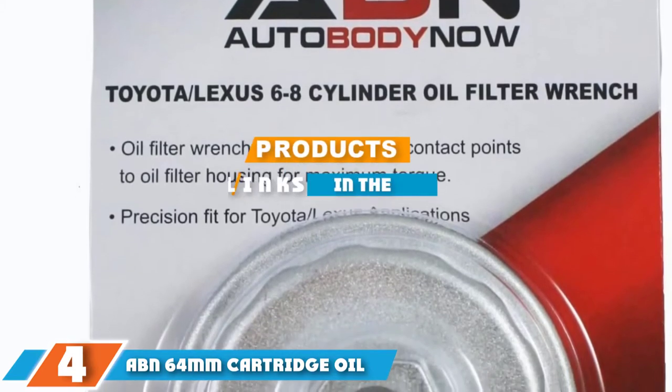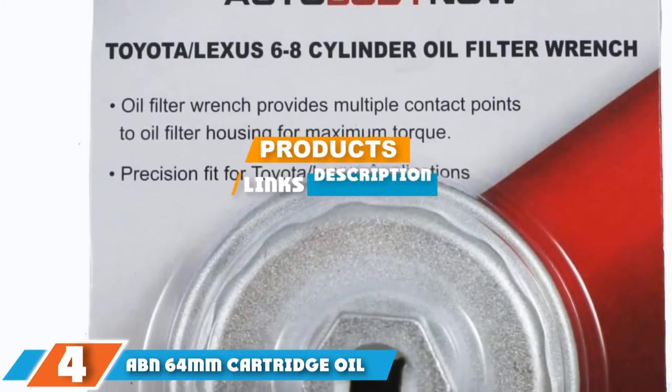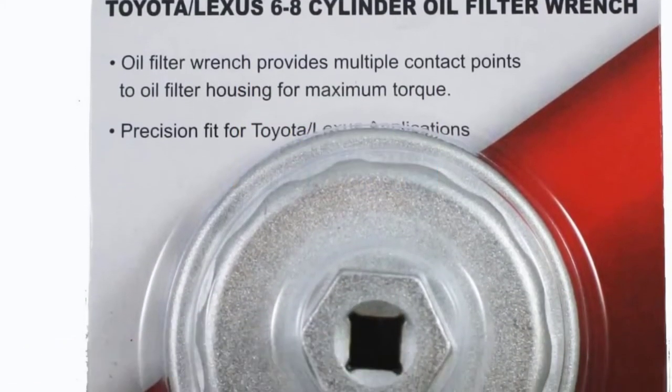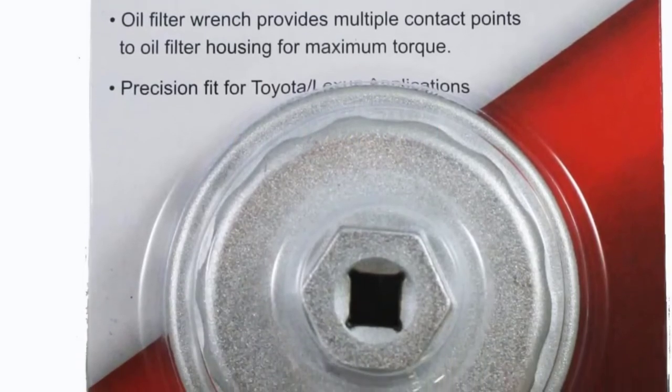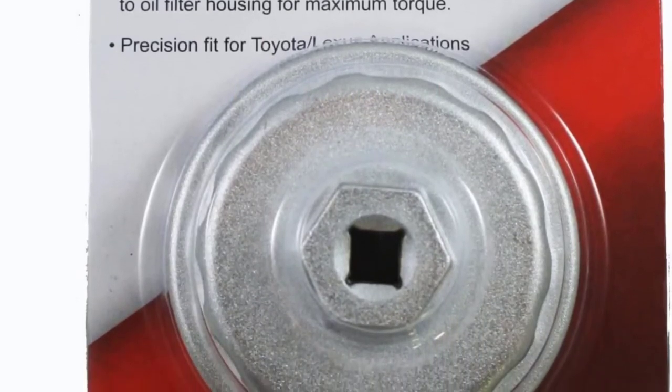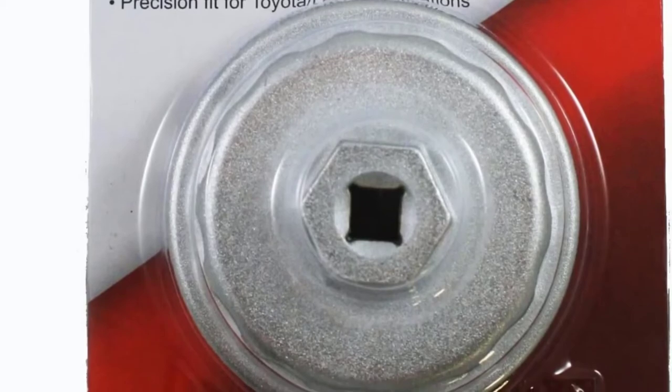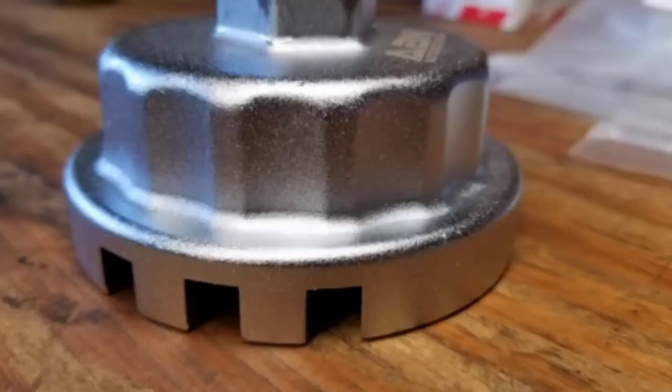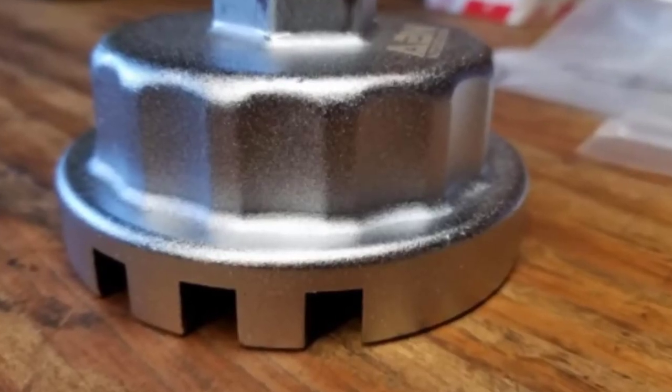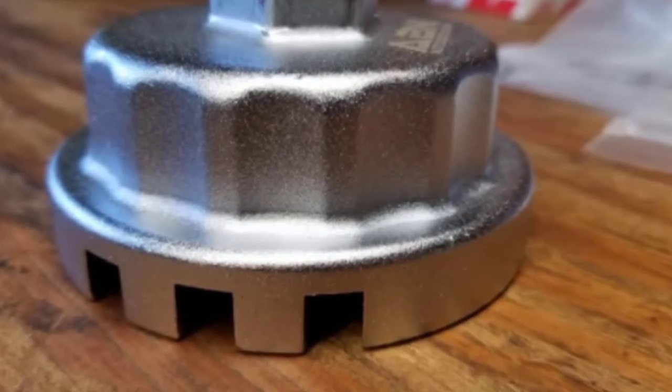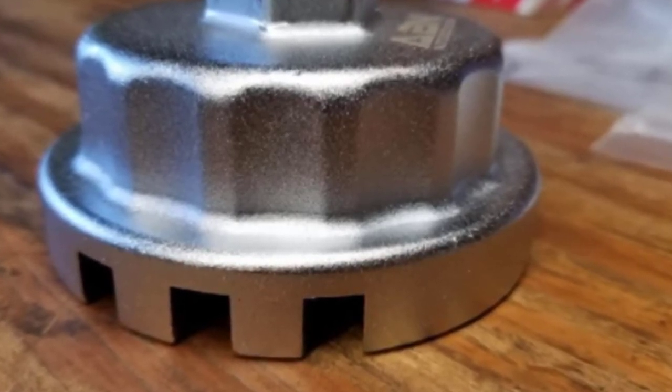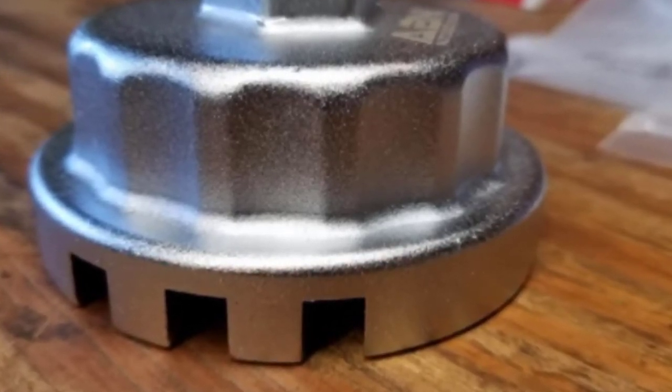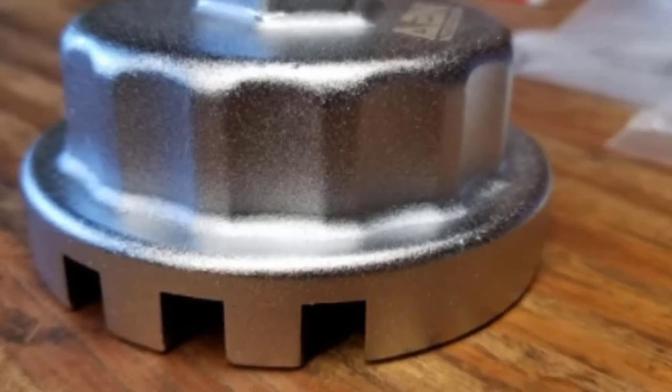The number four position is dominated by ABN 64mm cartridge oil filter wrench. If you are looking for a reliable tool to help you remove an oil filter, ABN might have just what you need. The company offers a versatile oil filter wrench that you get to use on Toyota and Lexus vehicles with six to eight cylinders. The wrench is made from forged alloy and designed for maximum torque.